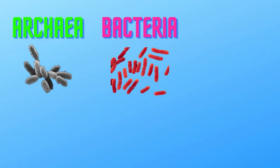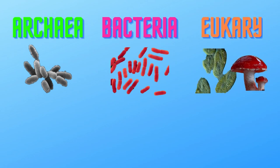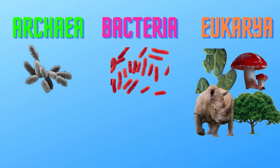Those are the two kingdoms of life of the prokaryotic cell types. The rest have eukaryotic cells, so the four remaining kingdoms belong in the domain eukaryote.